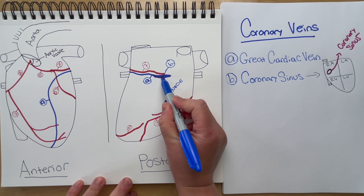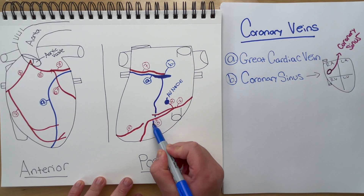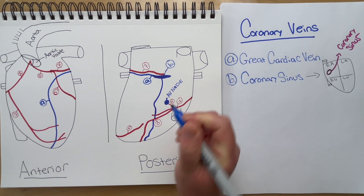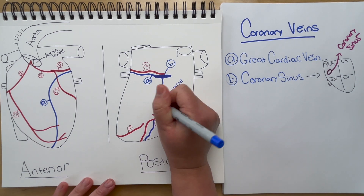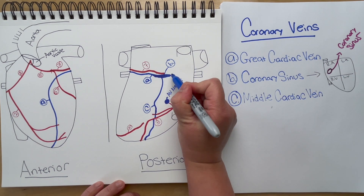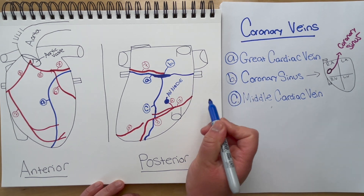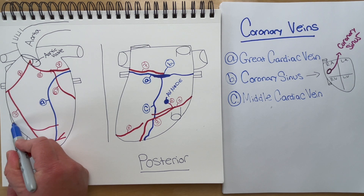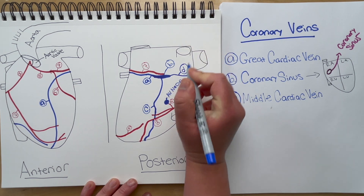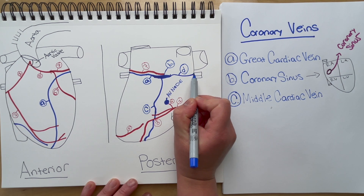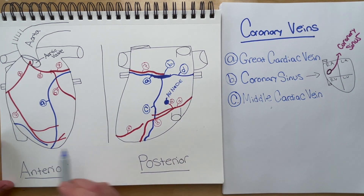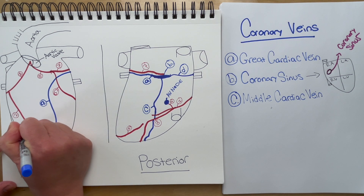Next we have the middle cardiac vein, which runs through the middle portion of the heart — hence the name. It also attaches to the coronary sinus, since all the major coronary veins meet up there to dump their deoxygenated blood. Lastly we have our small cardiac vein, labeled D. This extends from the coronary sinus, wraps around the heart, and on the anterior side of the heart descends downwards towards the apex. So to clarify: A is your great cardiac vein, B is your coronary sinus, and D is your small cardiac vein — which I'll label D on both the posterior and anterior portions.